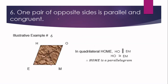For the last condition, number six: one pair of opposite sides is parallel and congruent. Even just one pair is enough to guarantee that the quadrilateral is a parallelogram. In quadrilateral HOME, HO is parallel to EM, and at the same time HO is congruent to EM. So HOME is a parallelogram by condition number six.